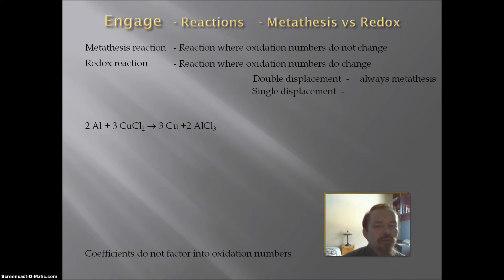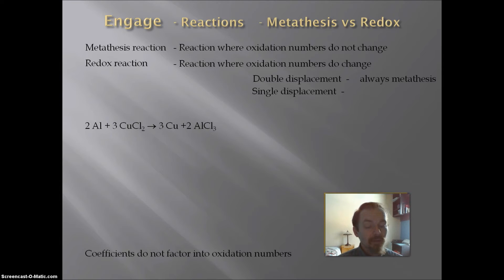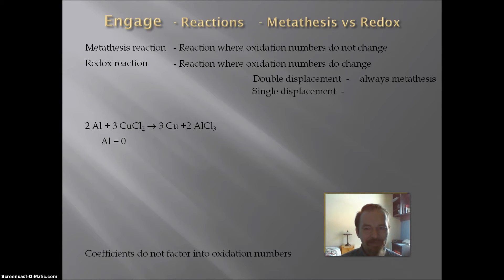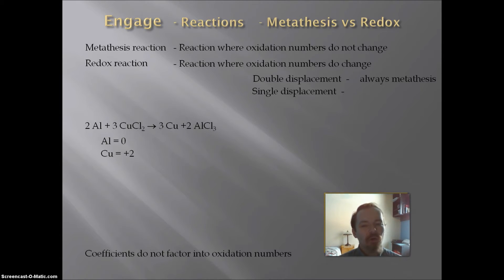The second type of reaction is a single displacement. Our example is: aluminum plus copper(II) chloride yields copper plus aluminum chloride. The equation is balanced and formulas are correct. Starting with reactants, aluminum is in its elemental state, so its oxidation number is 0. In copper(II) chloride, copper is a monatomic ion with a charge of plus 2, so its oxidation number is plus 2. Chloride is a monatomic ion with a charge of minus 1, so its oxidation number is minus 1.